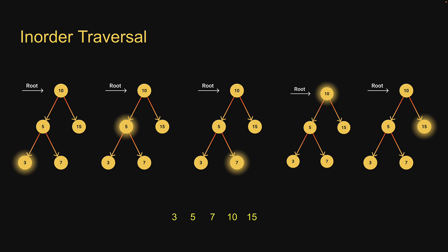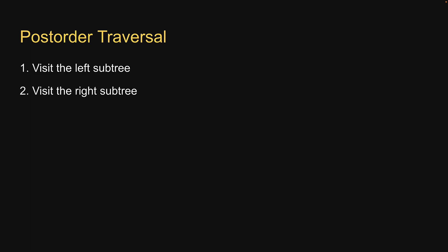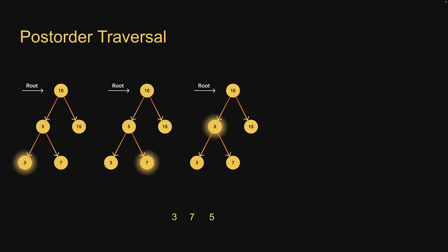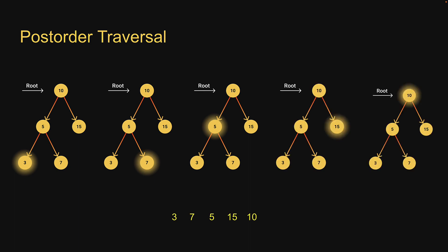Let's proceed to post-order. The algorithm is as follows: visit the left subtree, visit the right subtree, read the data of the node. For this traversal, I will not be walking you through the example — it's an exercise for you. Please spend 5 minutes coming up with the expected output. Pause the video and I will reveal what the output is for you to compare. The output is 3, 7, 5, 15, and 10. Let me know in the comments section if you got the same output.